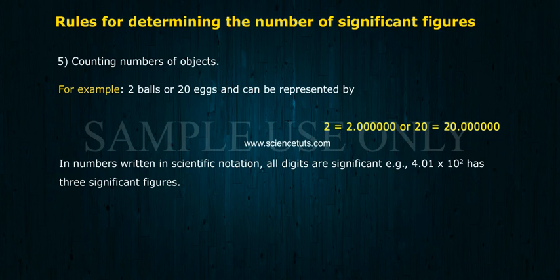Counting numbers written in scientific notation, all digits are significant. For example, 4.01 × 10² has three significant figures.